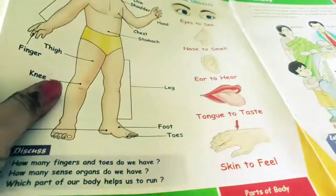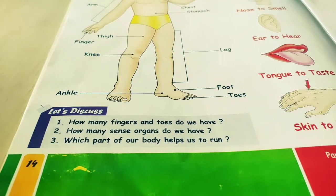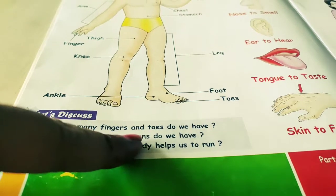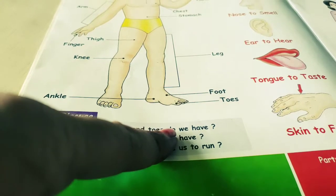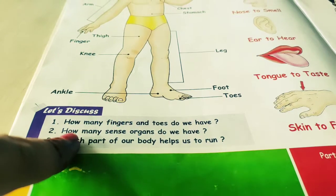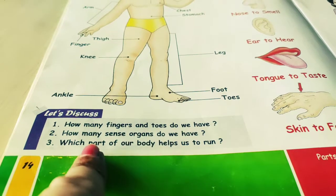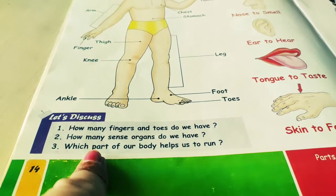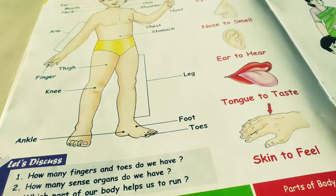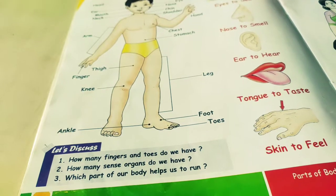Okay my dear students, you know very well — previous classes you had studied about it. Here are given only 3 questions. How many fingers and toes do we have? You know very well — 10 fingers and 10 toes. How many sense organs do we have? 5. What is the name of our sense organs? Eyes, nose, ear, tongue, skin. These are our 5 sense organs.